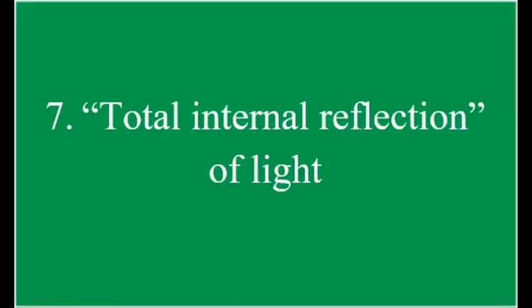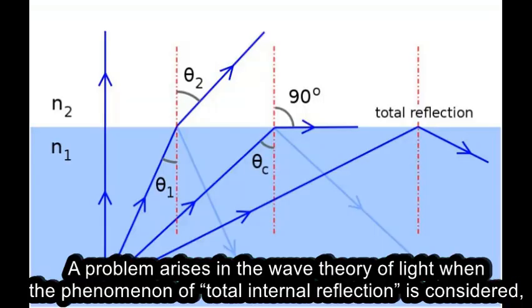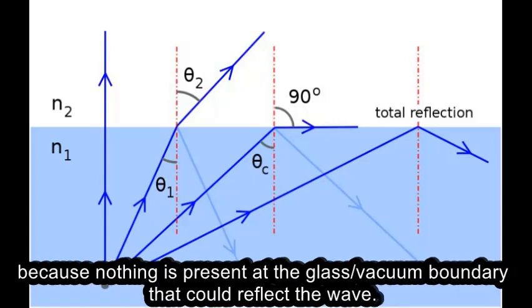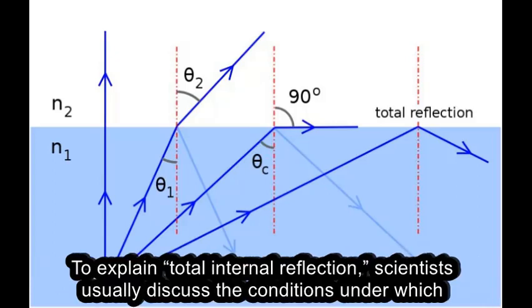A problem arises in the wave theory of light when the phenomenon of total internal reflection is considered, because nothing is present at the glass vacuum boundary that could reflect the wave.